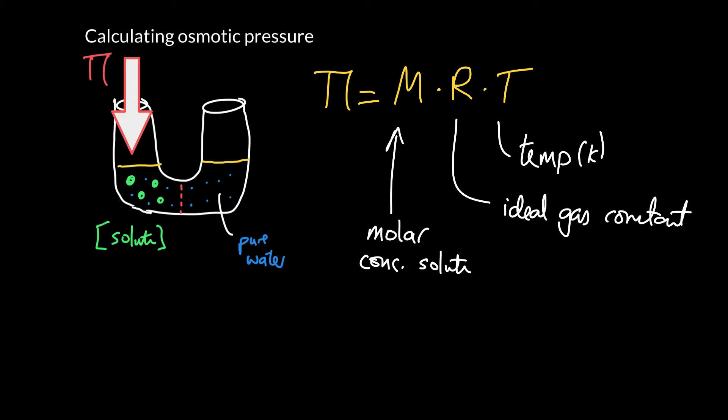The ideal gas constant has a value, and of course it has a value, but its value depends on the units you pick. And so if we pick atmosphere liters per mole Kelvin, then it's got a value of 0.08206 atmosphere liters over mole Kelvin.